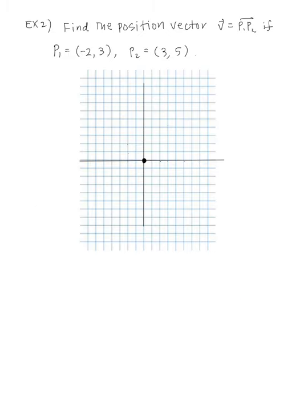Let's look at an example: find the position vector V from P1 to P2, where P1 is negative 2 comma 3 and P2 is 3 comma 5. Plotting negative 2 comma 3 and 3 comma 5, the vector P1 P2 connects these two points — this is our vector.